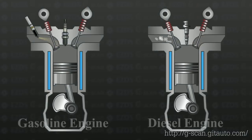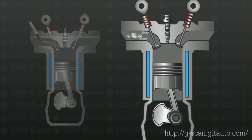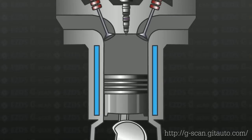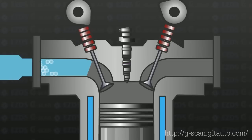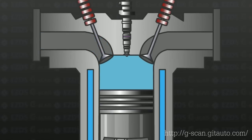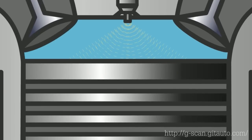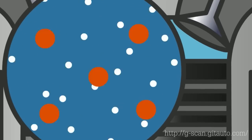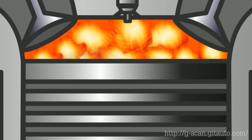Diesel engines, unlike gasoline engines, do not have a spark ignition system. Combustion occurs due to the heat produced from the compression of air that raises the temperature of the air-fuel mixture to its auto-ignition point. Depending on the design, the compression ratio ranges between 15:1 and 23:1 or even higher. In order for the diesel engine to ignite the fuel, what it needs is highly compressed air and the right amount of fuel at the right time.